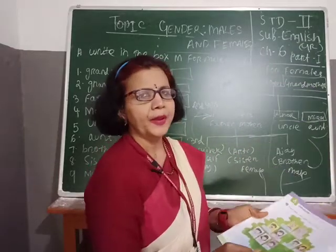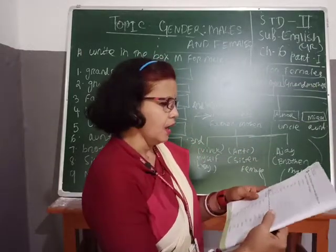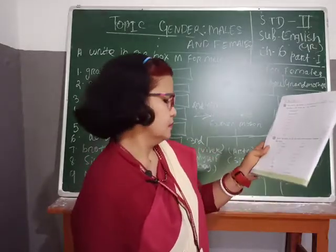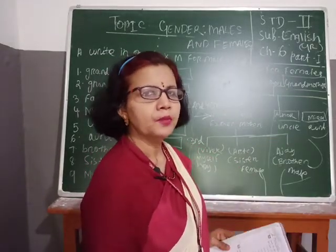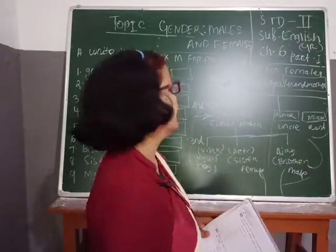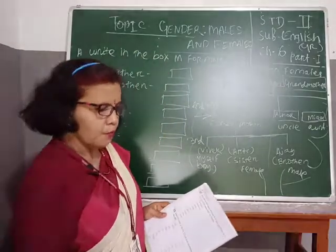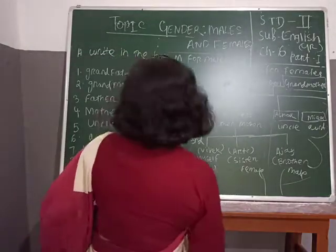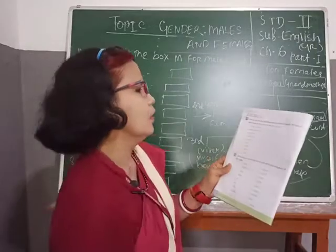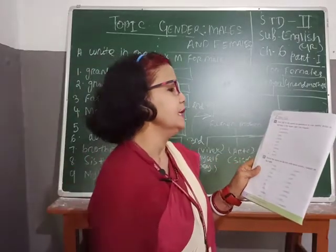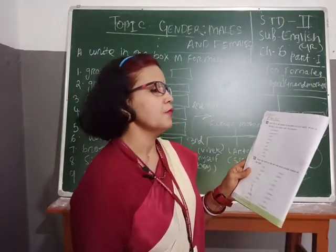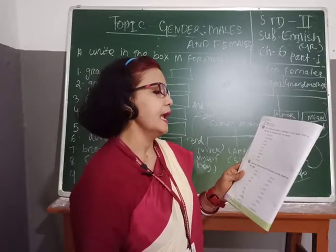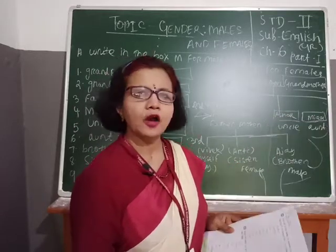Now turn your page. Come to page number 18. We will do Book Work A. Fill in the names of members of your family. Write in the box M for males and F for females.